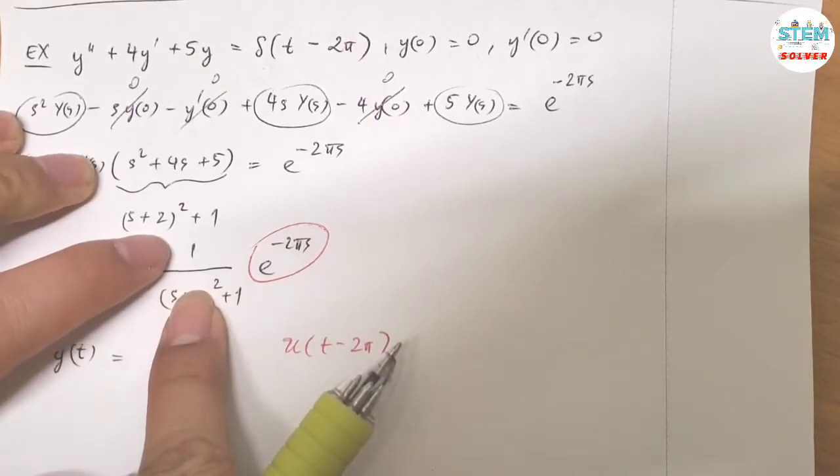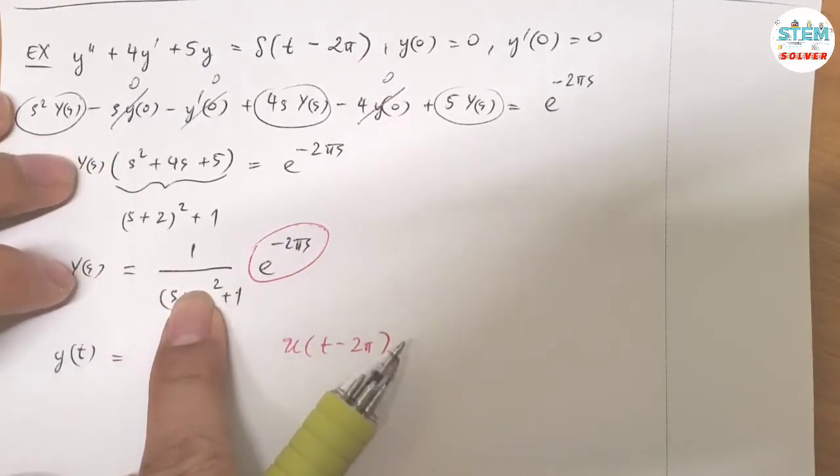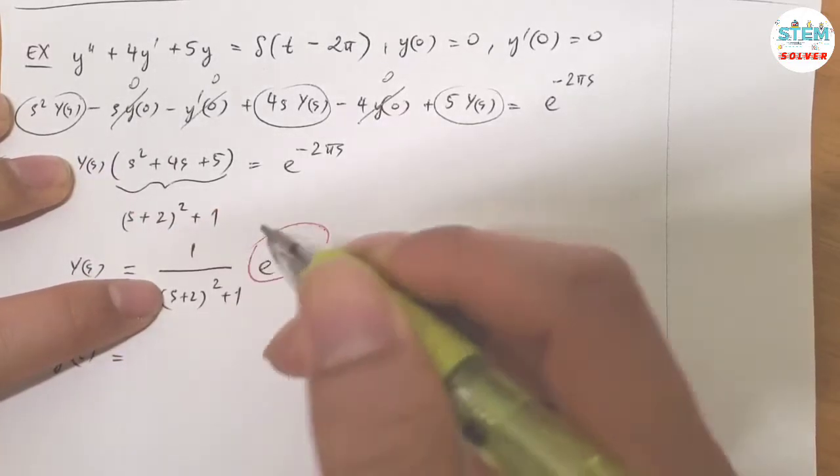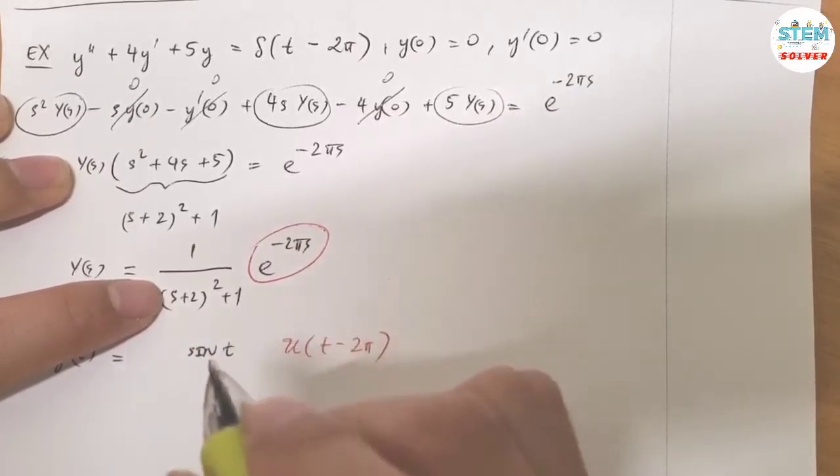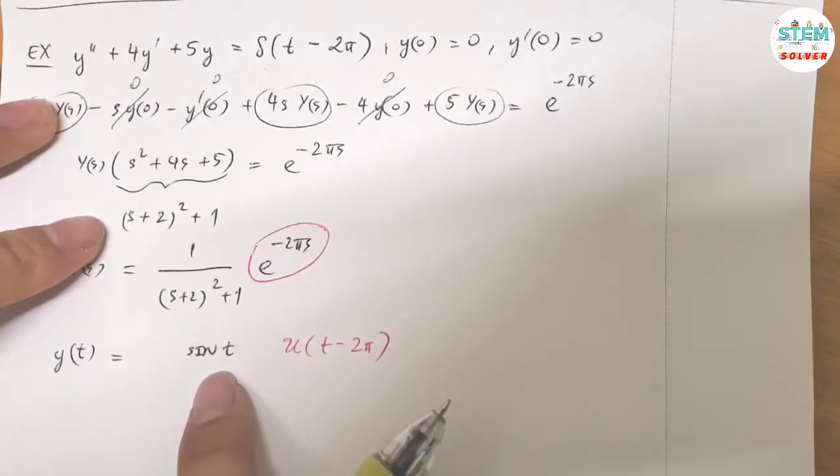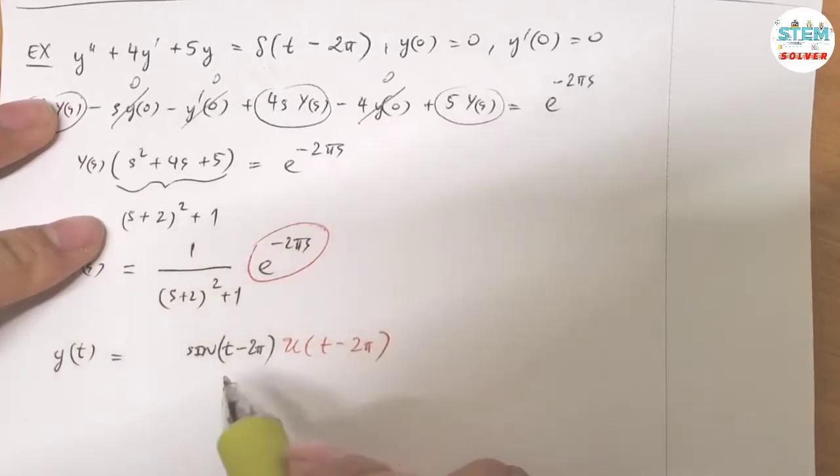Now for this one, if you ignore this, you're going to have 1 over S² plus 1. And what is that? That is sine. So sine t. But because you have the unit step function, the t has to match up with this t, which means I'm going to have t minus 2π instead of just t. And that is just sine.